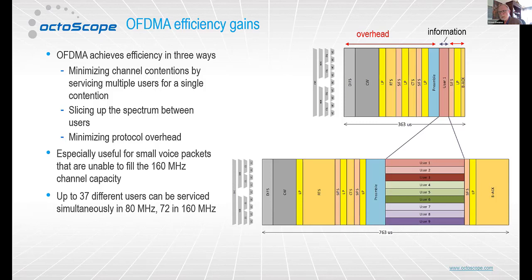Just intuitively, you can see there's a great gain in efficiency. The standard allows packing 37 different users simultaneously in an 80 MHz band and indeed 72 users in 160 MHz bandwidth. These diagrams are drawn roughly to scale and give one an idea of the benefit in efficiency.